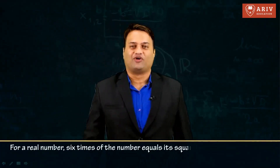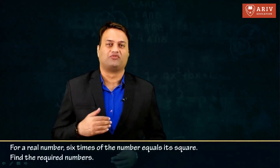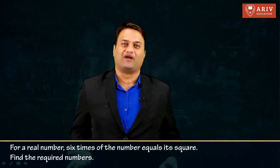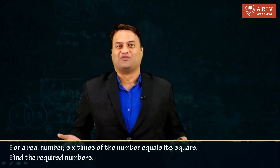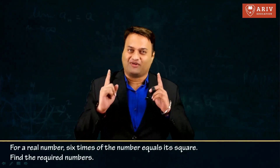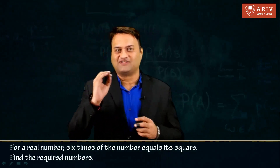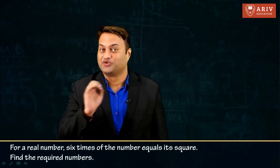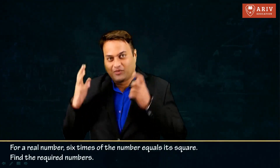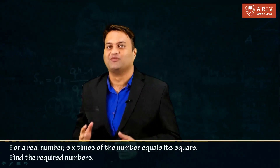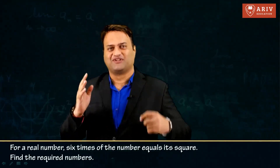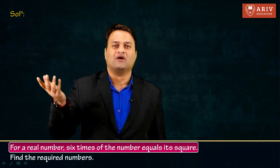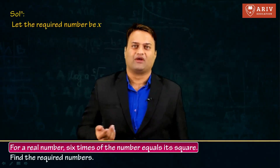The sum is: for a real number, six times the number equals its square. Find the required numbers. So let the number be x. Always in quadratic or linear equations, the first thing is the assumption statement — the most important. You should start with the assumption statement because the question is find the required numbers. Let the required number be x.